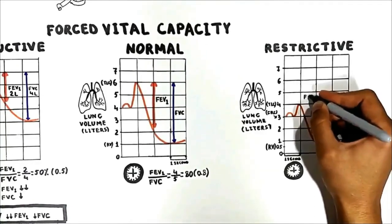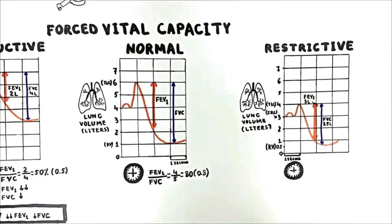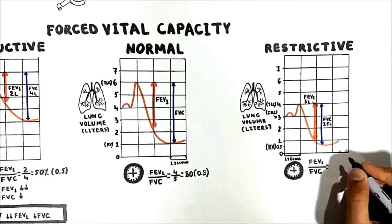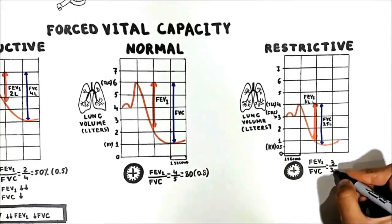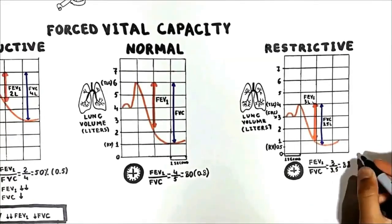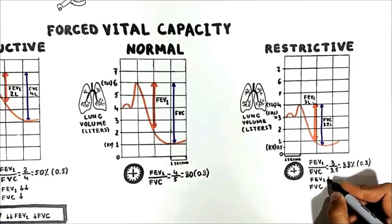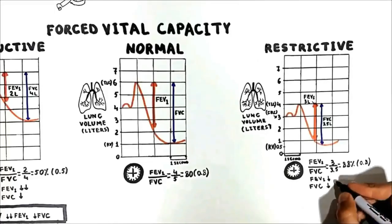The FEV1 is also decreased to 3L. The FEV1/FVC ratio is 3 divided by 3.5 = 88% — more than normal. It is extremely important to note that both FEV1 and FVC are reduced, but FVC is reduced more than FEV1. Because we are decreasing the denominator more than the numerator, the fraction increases, so the FEV1/FVC ratio is increased.